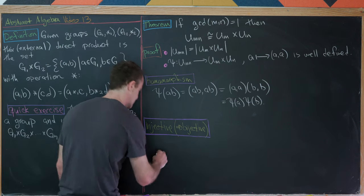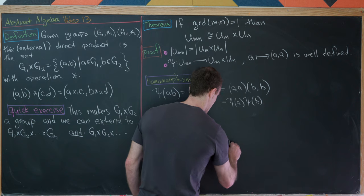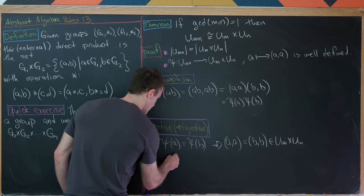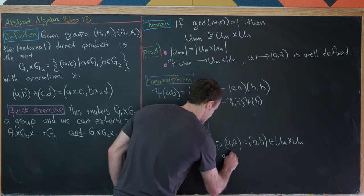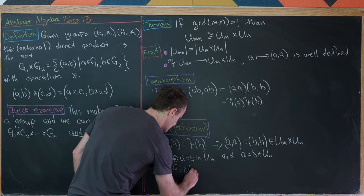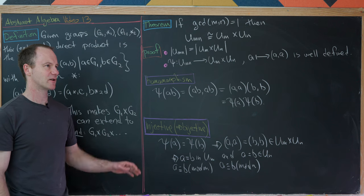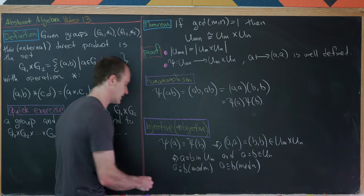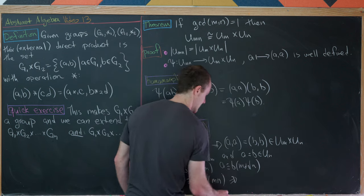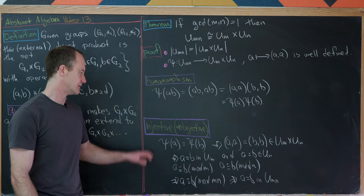For injectivity: if ψ(a) = ψ(b), then (a,a) = (b,b) in Um cross Un, so a ≡ b mod m and a ≡ b mod n. Since gcd(m,n) = 1, this gives a ≡ b mod mn, so a = b in Umn. Since ψ is an injective homomorphism between sets of equal size, it is an isomorphism.